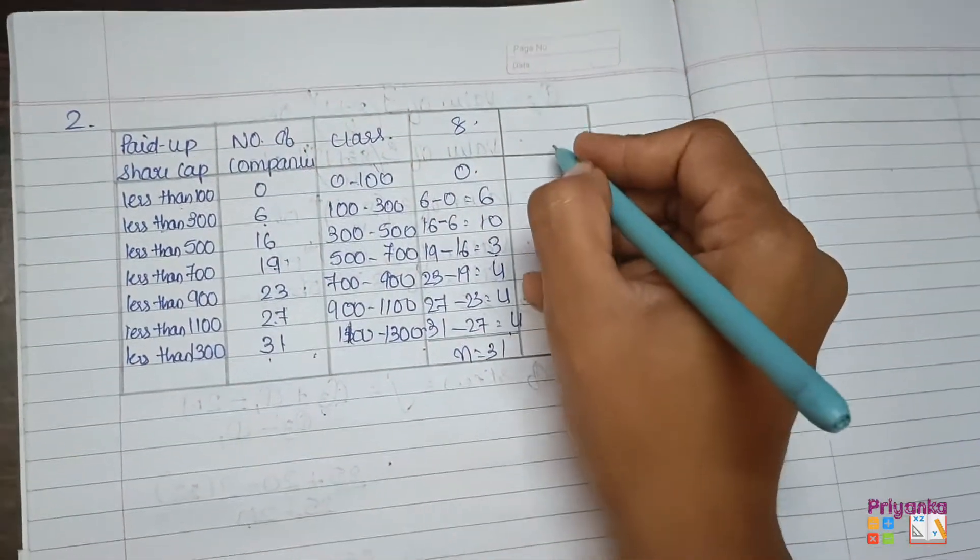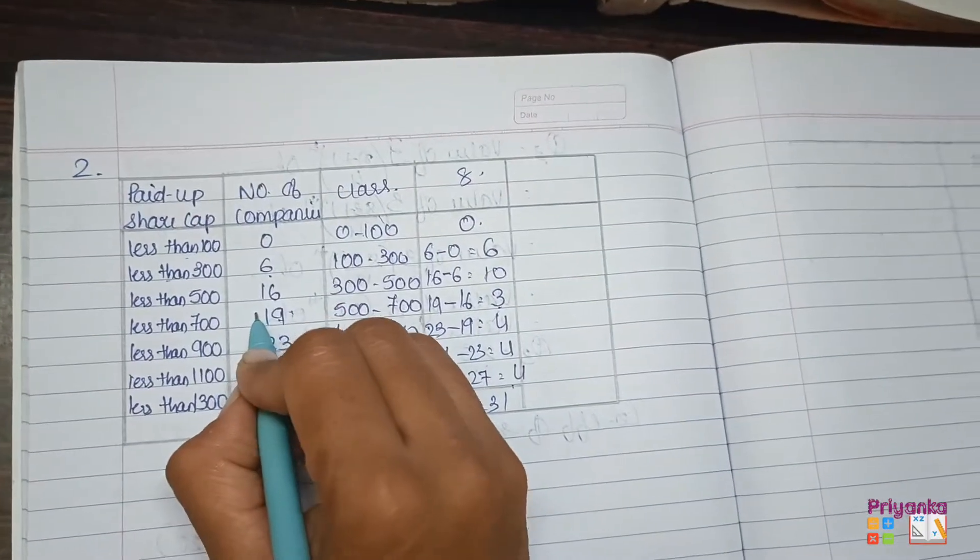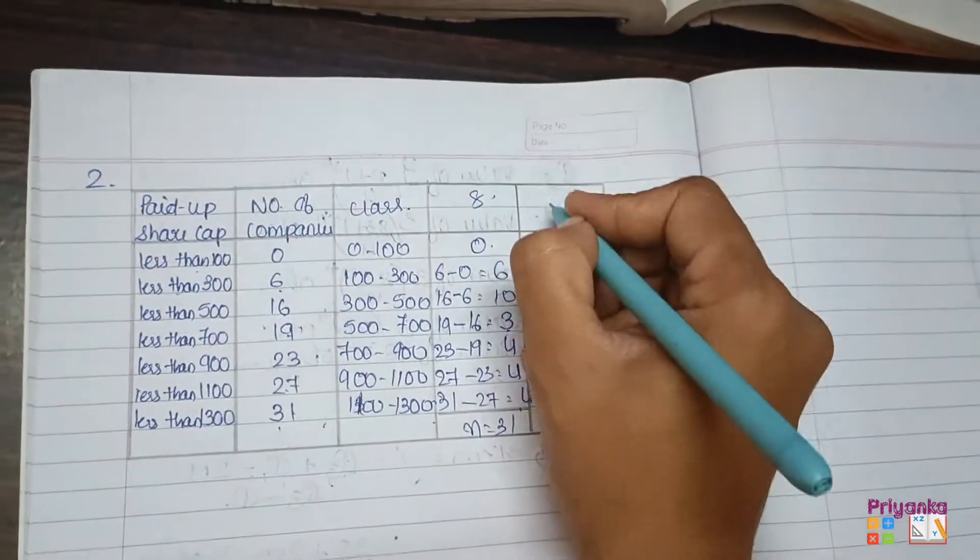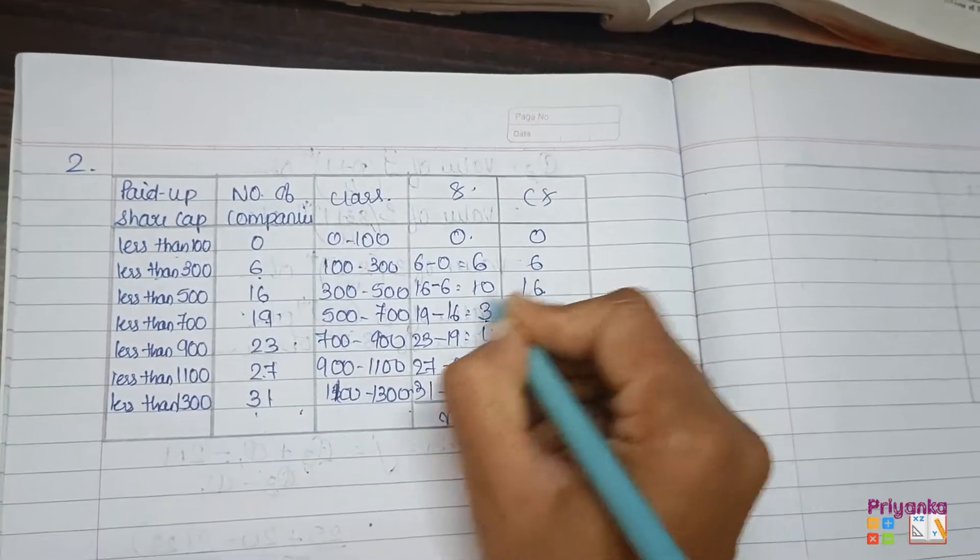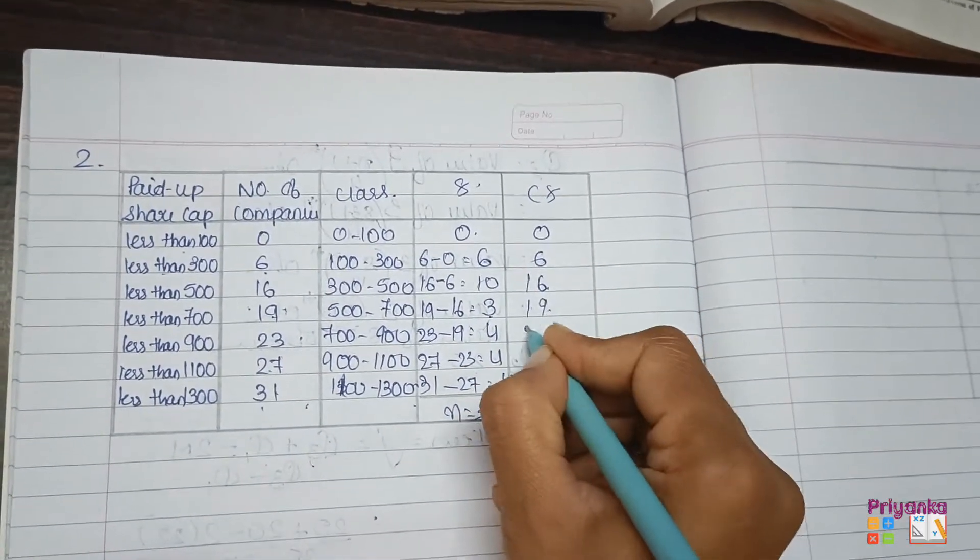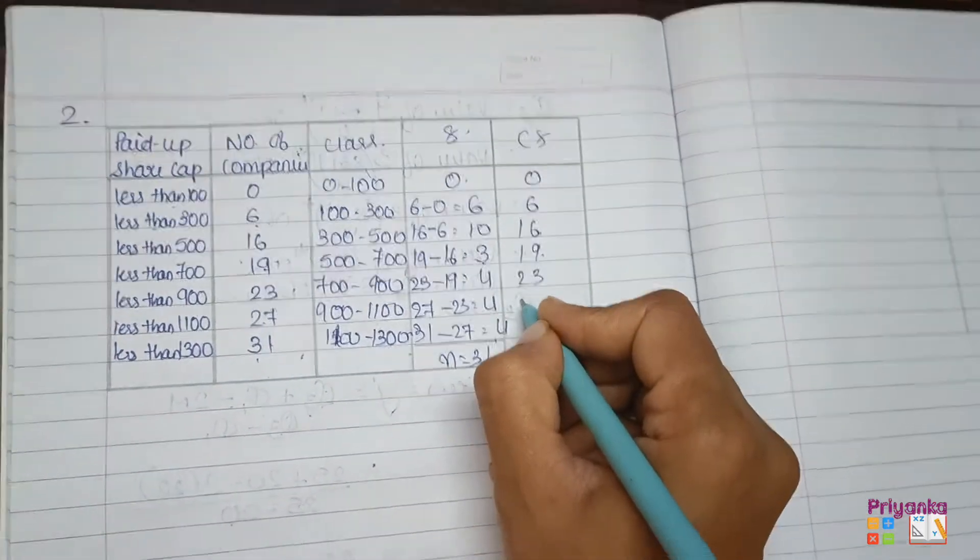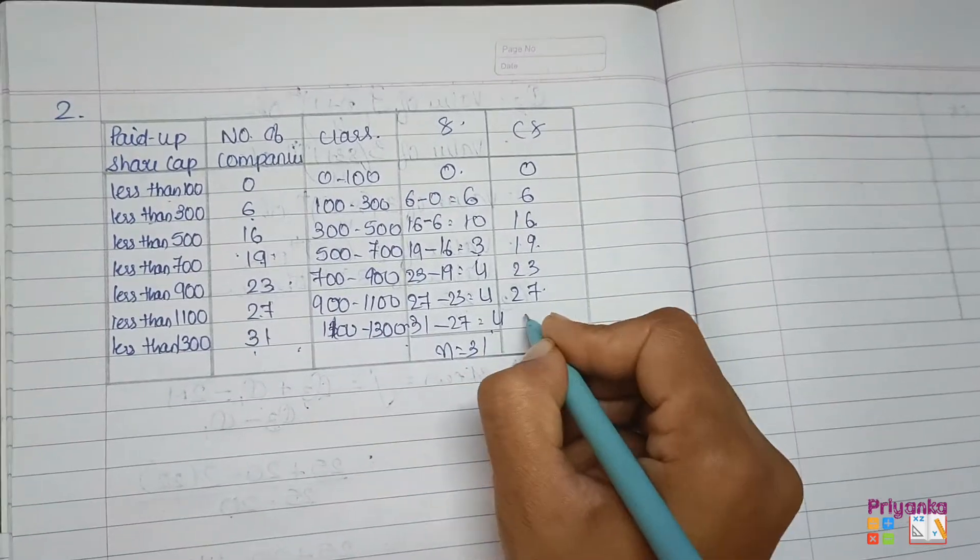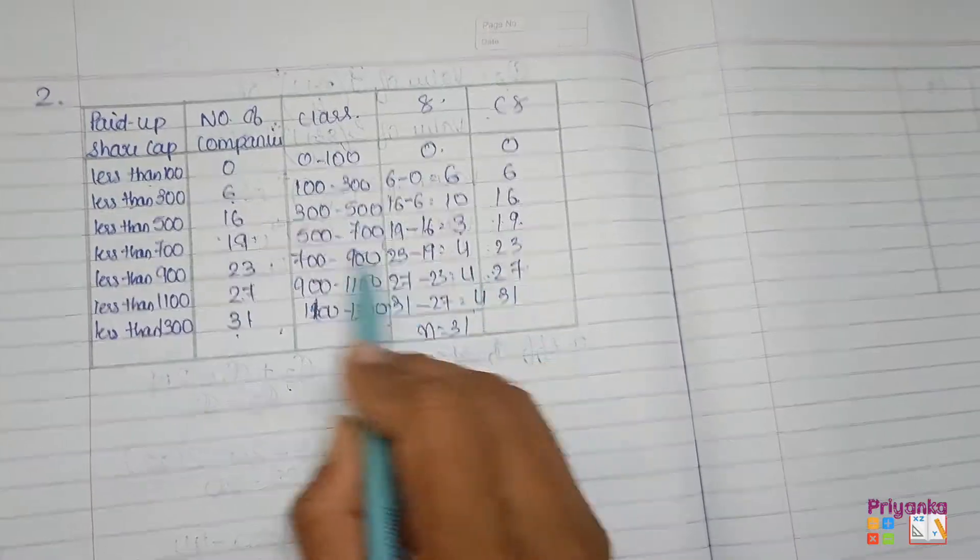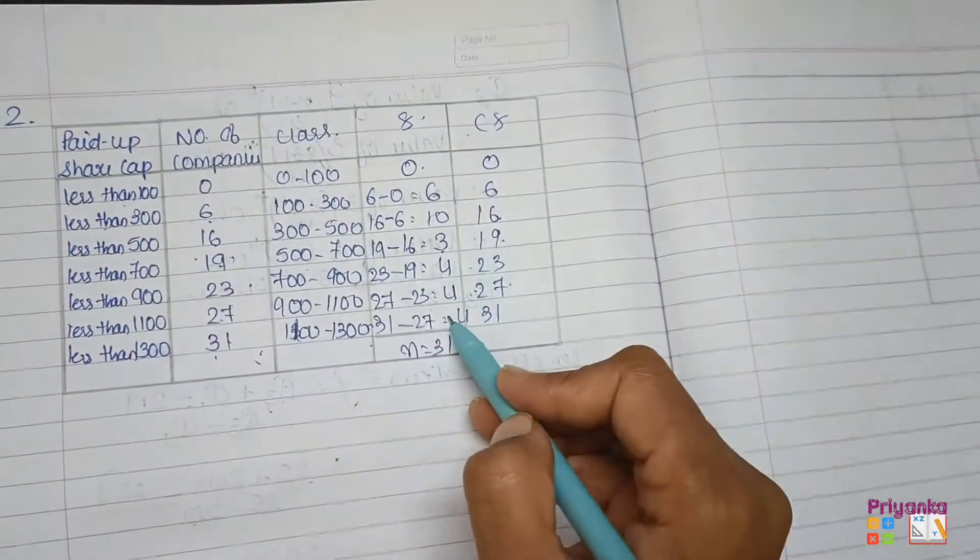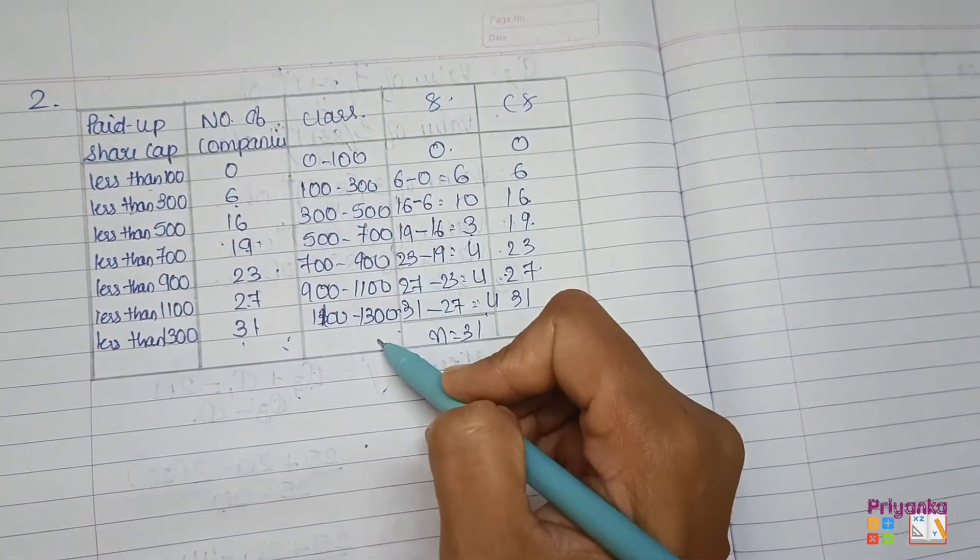After the frequency, you don't need to find out back again the CF. This is the ready CF you have, so I am just going to copy the same: 0, 6, 6 plus 10 is 16, 16 plus 3 is 19, 19 plus 4 is 23, plus 4 is 27, plus 4 is 31. You can see, both are same. So it was already CF, but we need the proper frequency and the proper class out of this information.